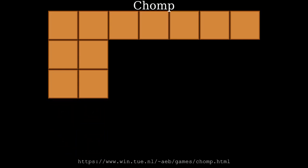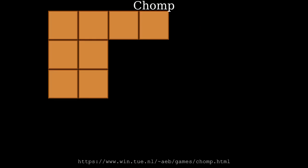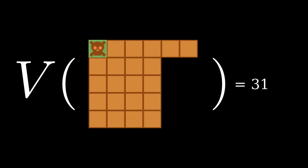The player that eats the last block loses. Because the top left block is always among the last blocks to be eaten, it is sometimes marked as being poisoned.